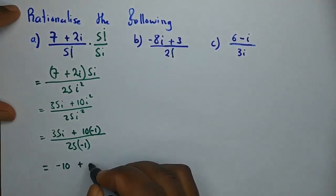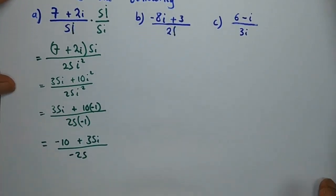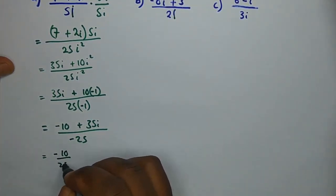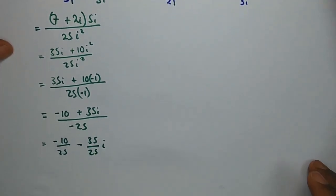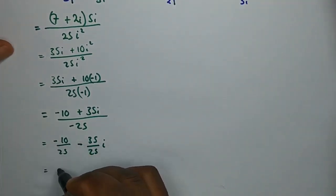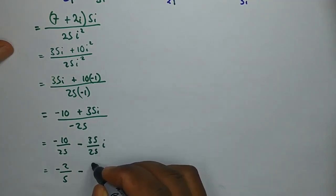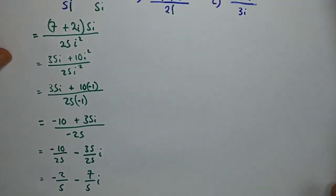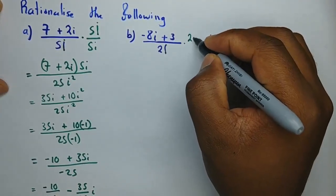So what we have is 35i plus 10 times negative one, divided by 25 times negative one. This simplifies to negative 10 plus 35i divided by negative 25. We then split the two terms: negative 10 over 25 minus 35 over 25 i. Reducing by 5, we get negative 2 over 5 minus 7 over 5 i, giving us the real part and the imaginary part.